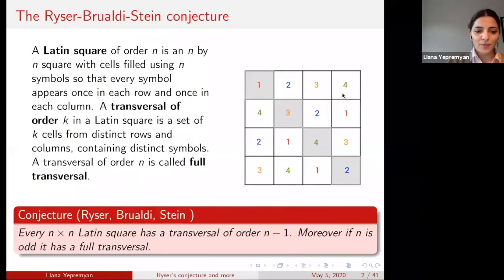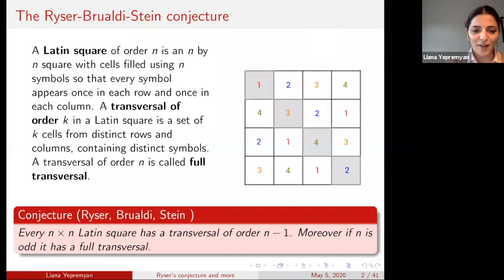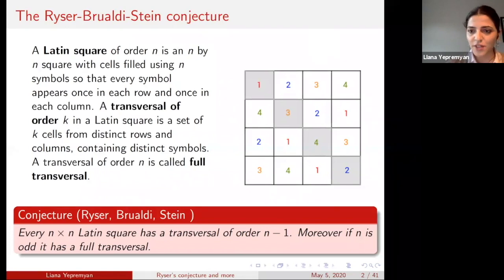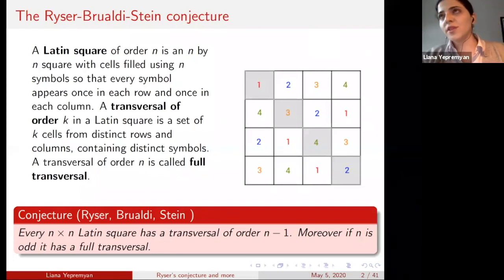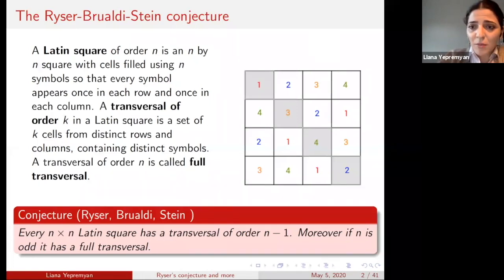A conjecture by Ryser, Ruraldi, and Stein — conjectured in various forms at various times, so I'll just call it the Ryser-Ruraldi-Stein conjecture — says that every n by n Latin square must have a transversal of size n minus one. Moreover, if n is odd, it must have a full transversal. The second part cannot happen if n is even, because there are Latin squares of even order which do not have a full transversal. The simplest example is the Cayley table of Z_2, and more generally the Cayley table of the group Z_{2k}.